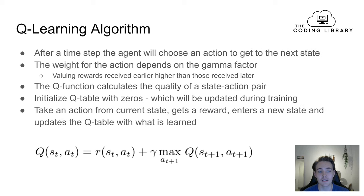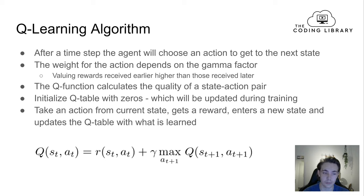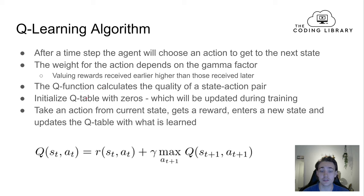In the Q-learning algorithm, the agent chooses an action to get to the next state. The weight for that action depends on the gamma factor, which values earlier rewards higher than later ones. The Q-function calculates the quality of a state-action pair — how good an action is for the current state — and we use that to update our Q-table.